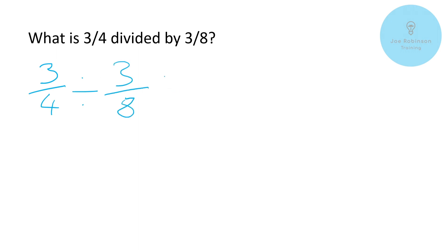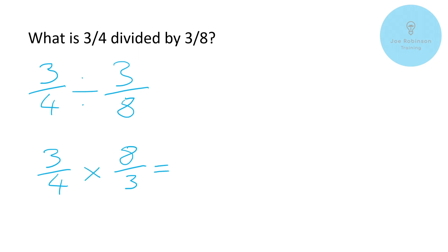If you remember from the previous video, we use the mnemonic DUM — D-U-M. D: when you're dividing, you turn the second fraction upside down. Then M: multiply together. So we've got three quarters — three over four — and we're going to turn the second fraction upside down, giving us eight over three. Then we multiply these together. When multiplying fractions, we multiply the top two numbers together and the bottom two numbers together.